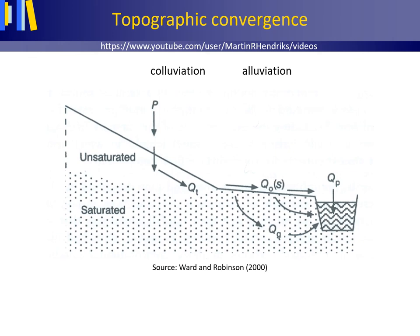Thus, processes such as colluviation and alluviation are responsible for flattening the foot of hillslopes, and thus for topographic convergence that amplifies the effect of a rising water table, and may cause throughflow to exfiltrate.